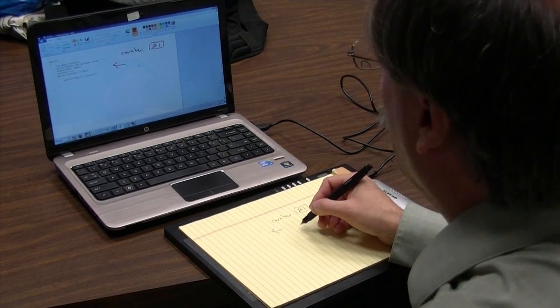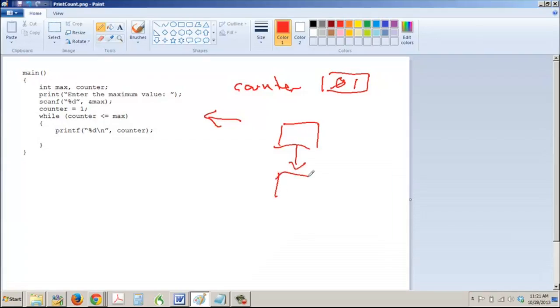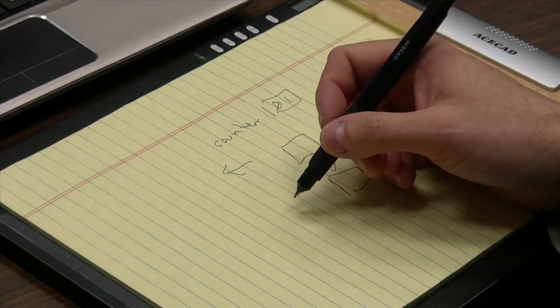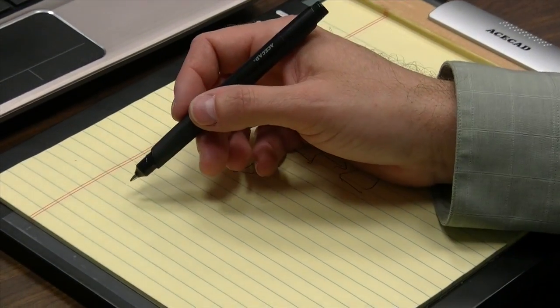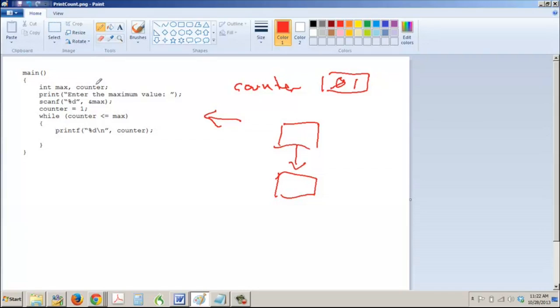And then I can also draw things freehand, so I can do my little block diagrams and whatnot over on the side. This gives me basically the same ability as if I'm writing on the whiteboard, but I have the advantage that I can have prepared material already on the slide or whatever.